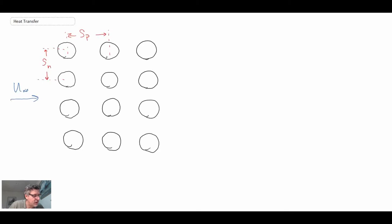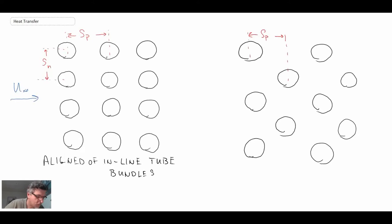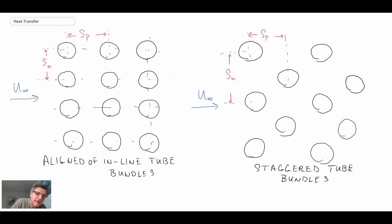So first of all, what we have drawn here is the case of aligned or inline tube bundles. And the second case is where we have a staggered arrangement. So what we can see here, these are all supposed to be of the same diameter, but what we can see with the inline arrangement, all of the tubes are organized in a nice pattern where they all line up with one another.